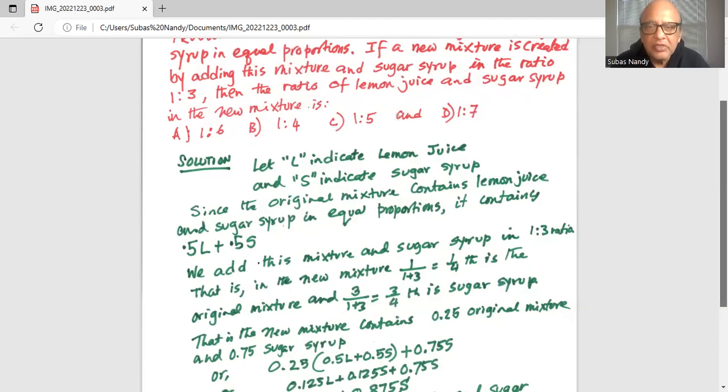So let's see. Let L indicate the lemon juice and let S indicate sugar syrup. Since the original mixture contains lemon juice and sugar syrup in equal proportion, it contains 0.5L plus 0.5S.